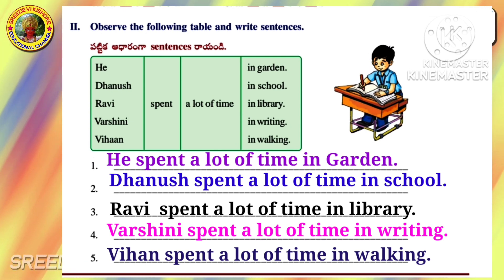True or False questions on APJ Abdul Kalam. First one: Abdul Kalam was born in Rameswaram — True. Second one: He was known as Iron Man of India — False. Third one: He was a great singer — False. Fourth one: He was the 11th President of India — True. Fifth one: He was given the Bharat Ratna in 1990 — False.